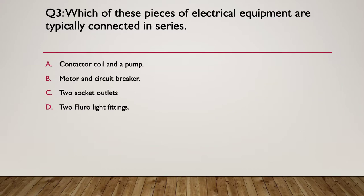Question three: which of these pieces of electrical equipment are typically connected in series? Here is your hint: think about the purpose of each device, think about what they do and how you apply and use them. The answer is B, motor and a circuit breaker. The protective device does go in series with the motor. Two socket outlets are normally wired in parallel, and two fluoro light fittings again would be wired in parallel, not series.